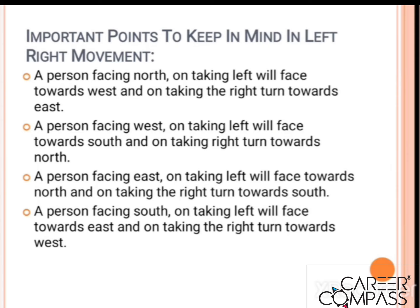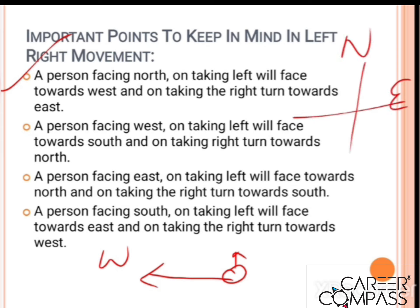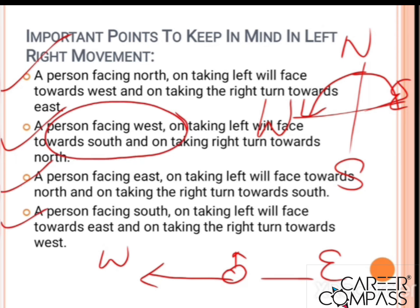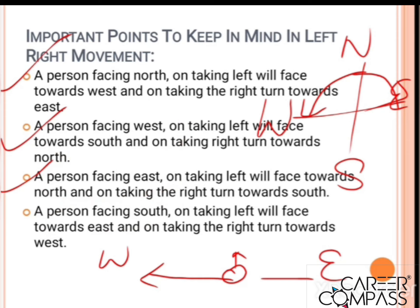Here are important points for left-right movement. A person facing North, on taking a left turn, will face West. If facing North and taking a right turn, they will face East. Similarly, you should know what happens when a person facing West, East, or South takes a right or left turn - go through these so it becomes clear.